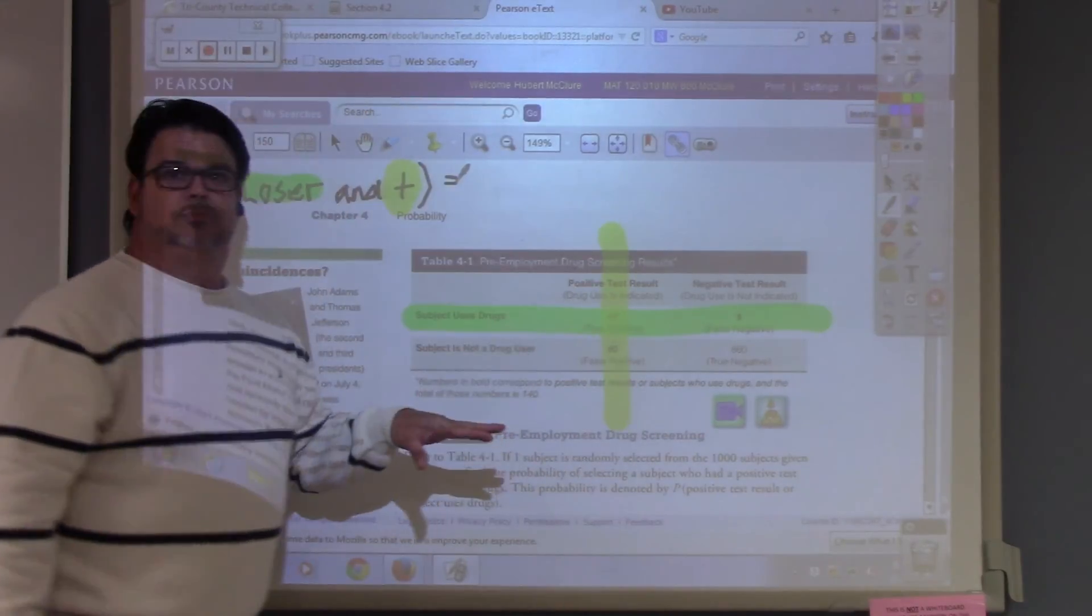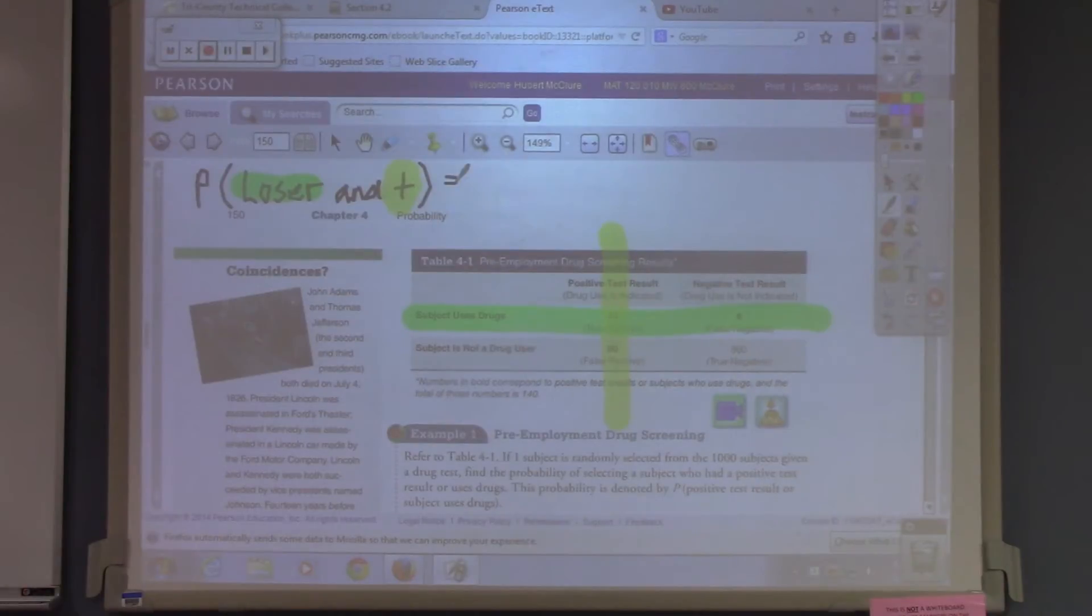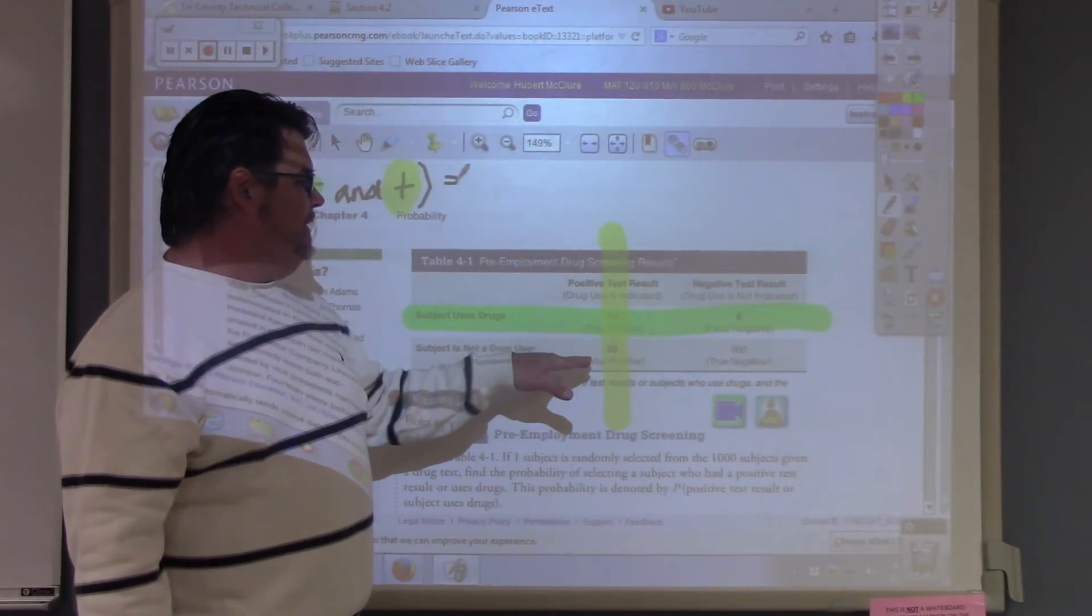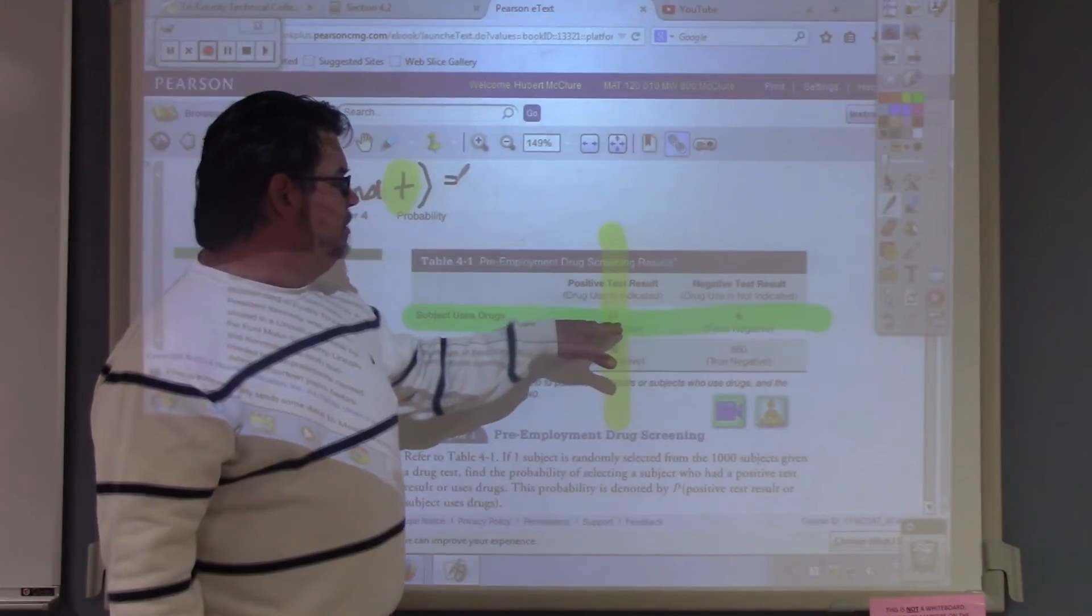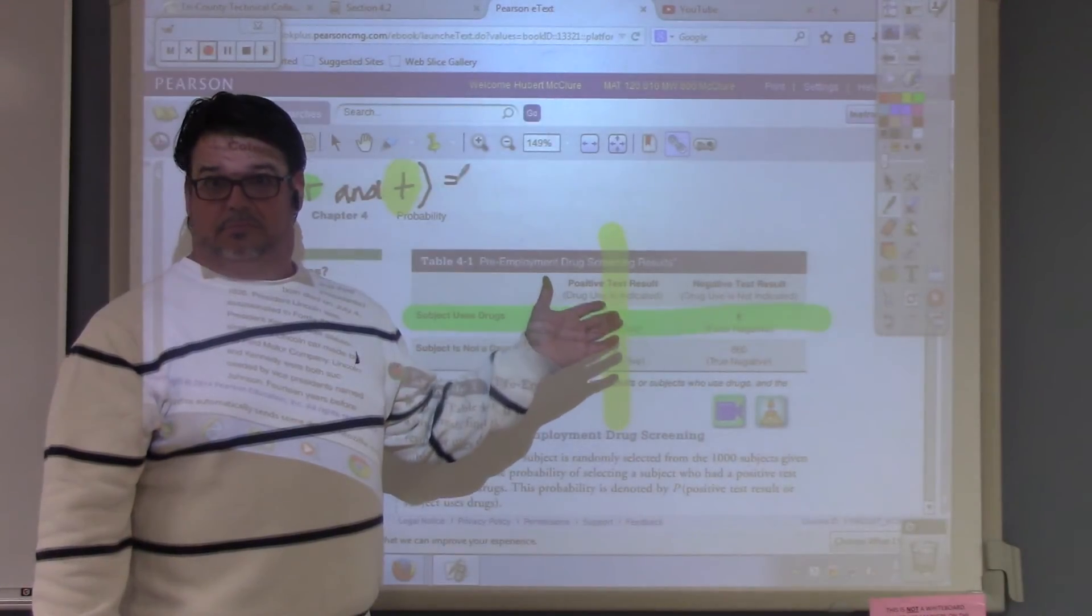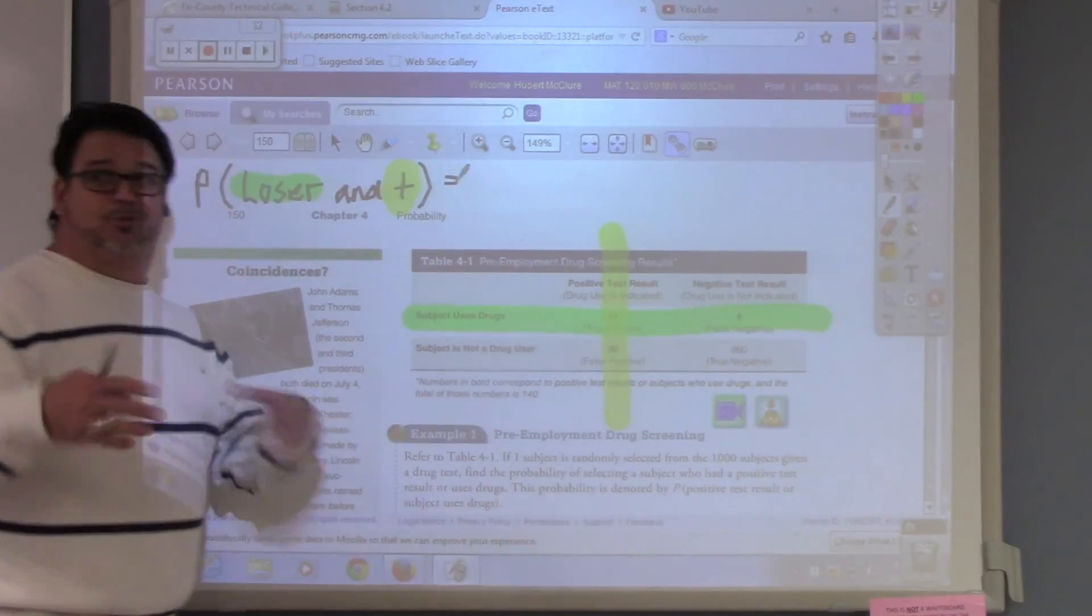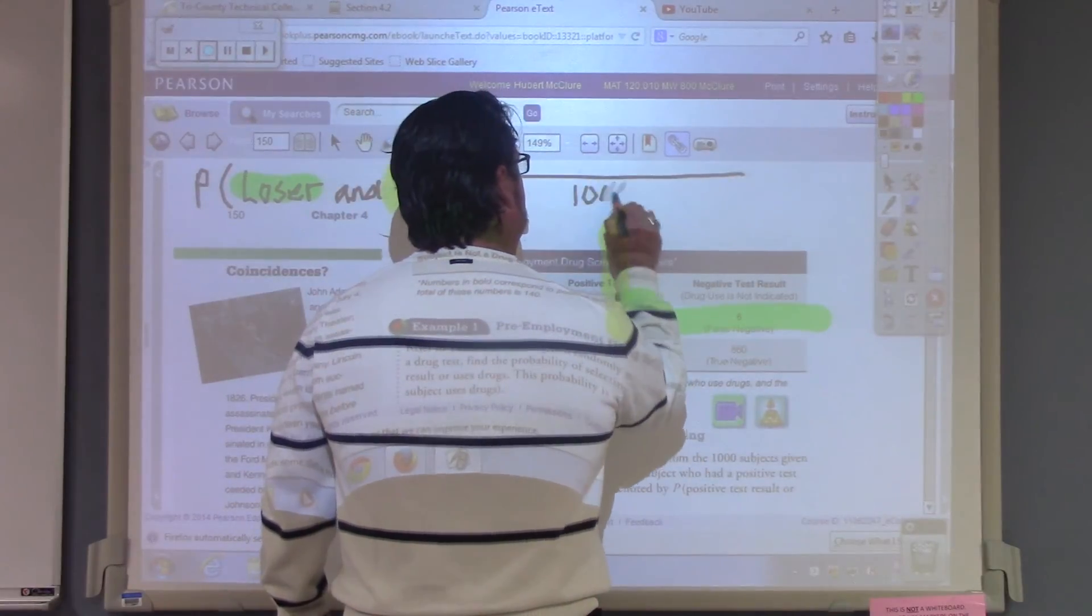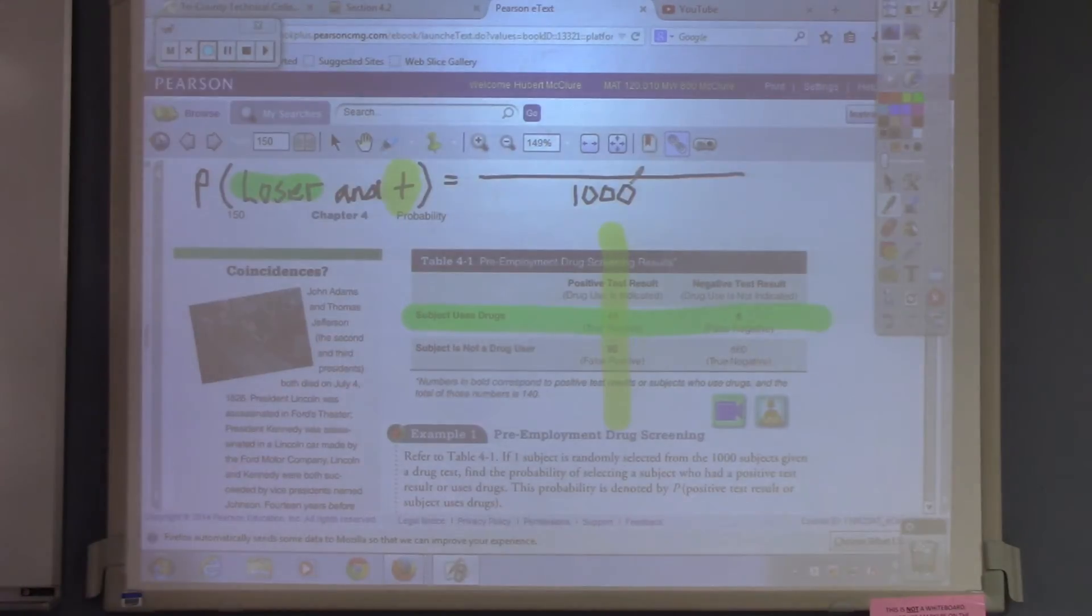What is the total? You always got to have a total, because the total number of cards is 52. The total number of sides on a coin is 2. The total number of sides on a die is 6. The total number of babies is 8. So, what's the total here? Well, let's see if we can add this. 90 plus 860 is dang old 950. Dang old 994. Dang old 1,000. Somebody check it for me? On the calculator, please. So, everything's over 1,000.